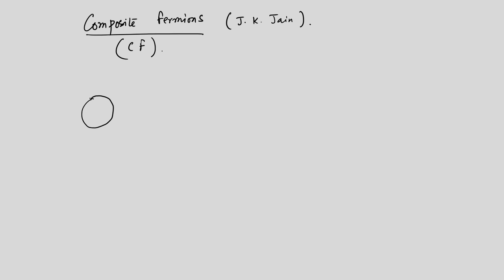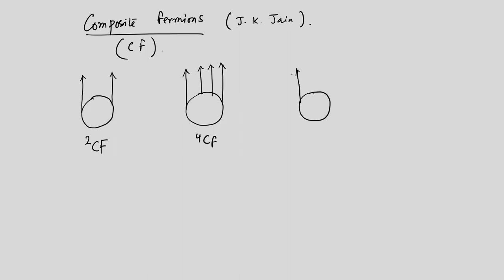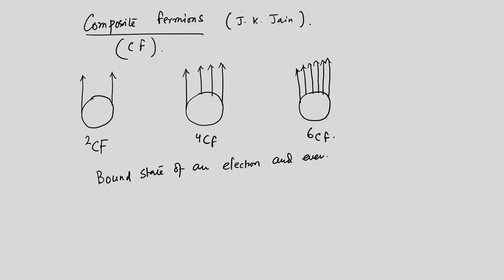To visualize this: an electron is drawn carrying two flux quanta — let's call this 2CF. Another carries four flux quanta — that is 4CF. And with six flux quanta, we call it 6CF. It is as if it is a bound state of an electron and an even number of flux quanta.